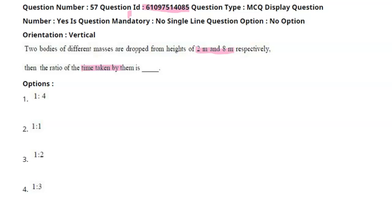We have two different masses at different heights. The first height h1 is 2 meters, so the distance s1 is also 2 meters. The second height h2 equals 8 meters, so the distance s2 is 8 meters.